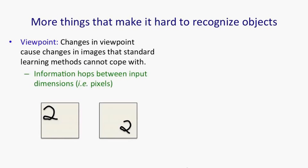The problem is that information hops about between the input dimensions. So typically in vision, the input dimensions correspond to pixels. And if an object moves in the world and you don't move your eyes to follow it, the information about the object will occur on different pixels. That's not the kind of thing we normally have to deal with in machine learning.